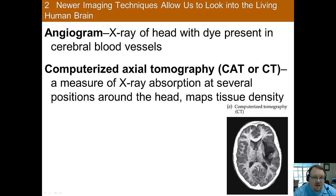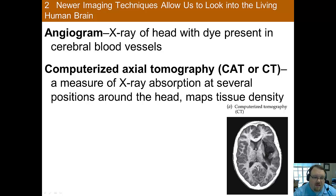An angiogram, or a CAT scan, uses X-rays in order to do the imaging. Angiograms usually consist of injecting an X-ray blocking dye into the blood in order to help map the blood vessels in one's brain, which can be helpful for looking at blockages, hemorrhages, or vascular disease. Computerized axial tomography, or CAT scans, measure X-ray absorption at different portions around one's head, giving a map of tissue density — a good technique if you want to know the structure of the brain without being concerned with brain activity.